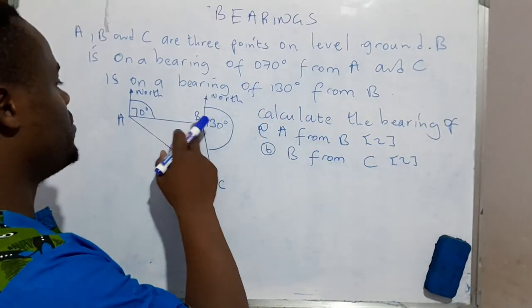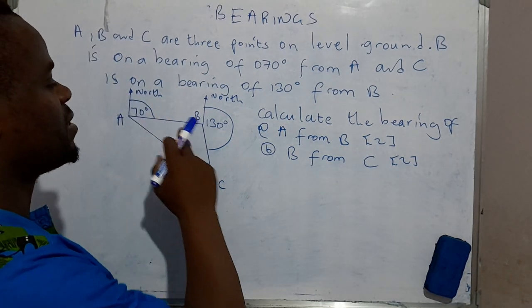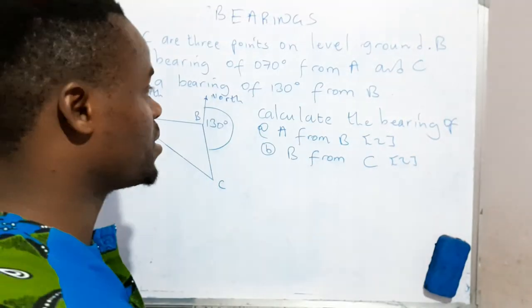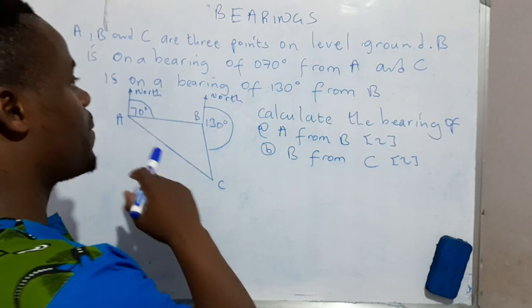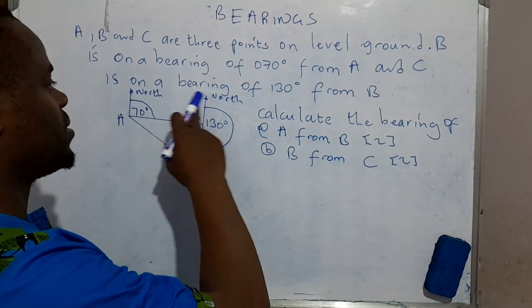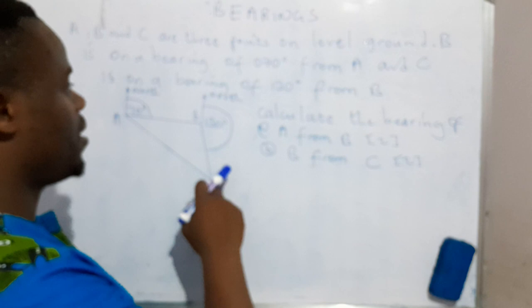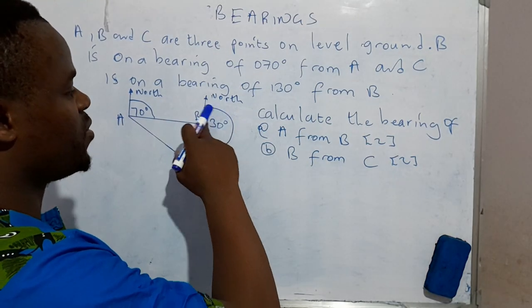B is on a bearing of 070 degrees from A, and C is on a bearing of 130 degrees from B.